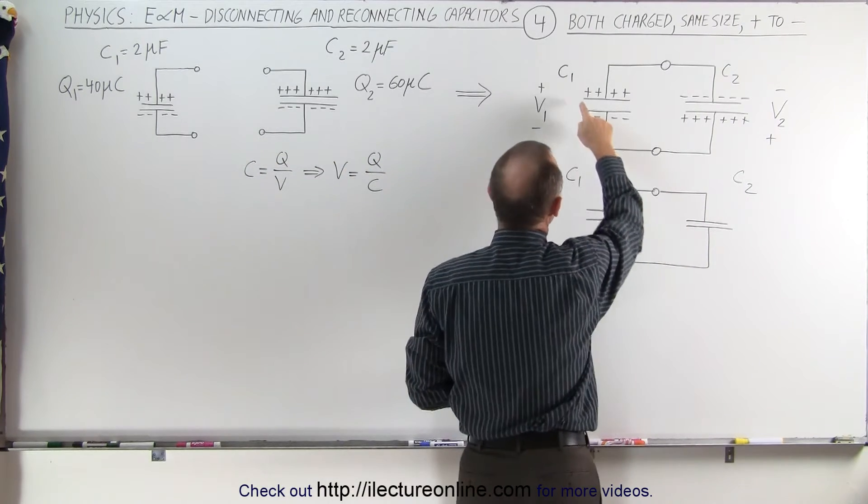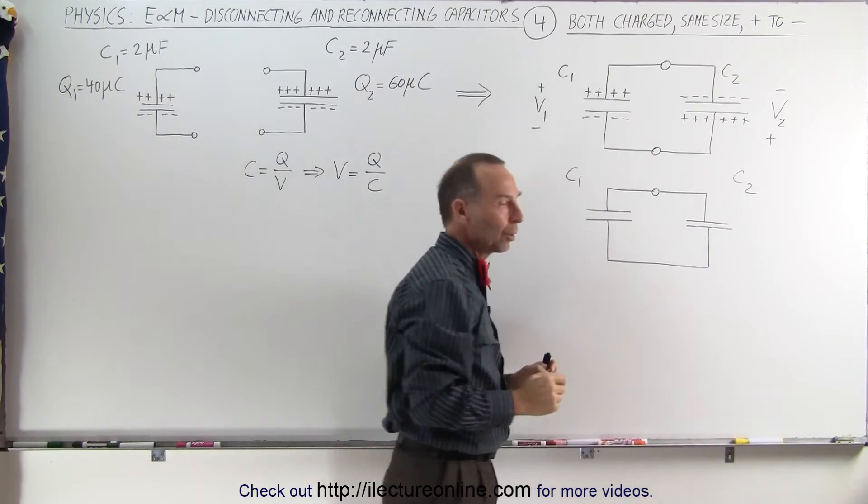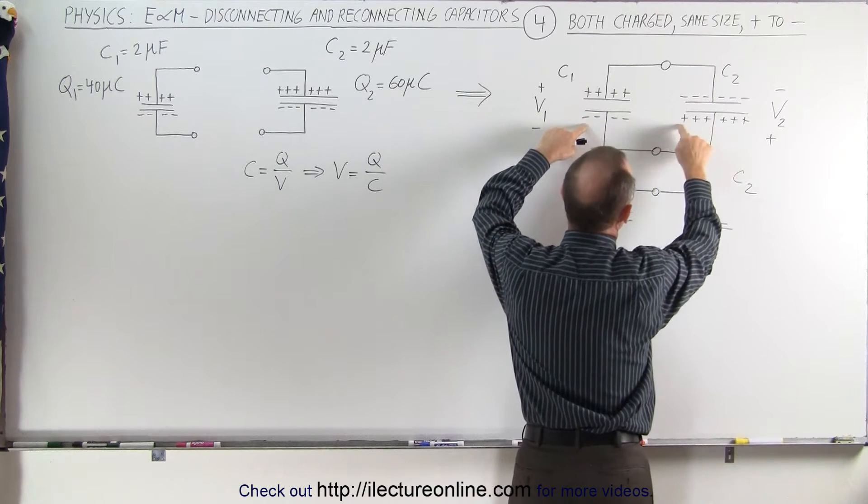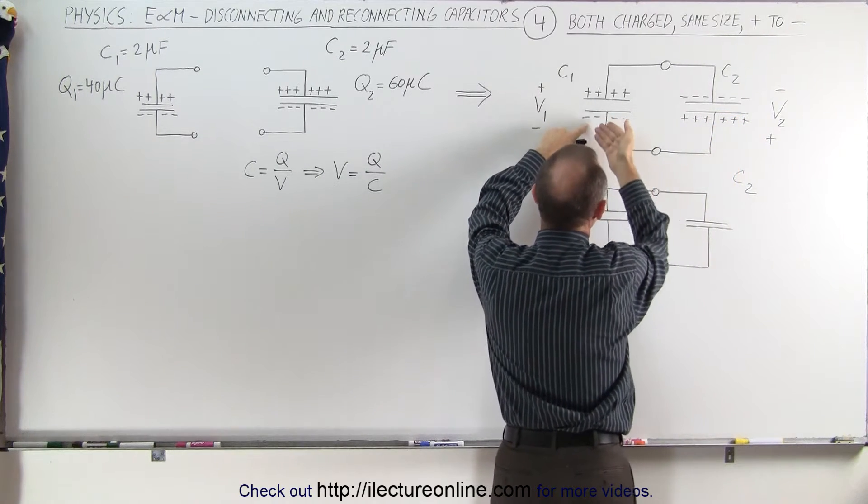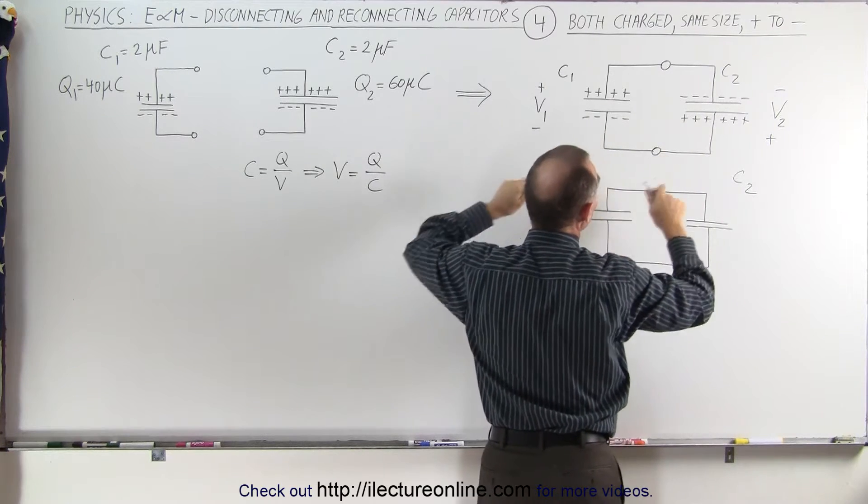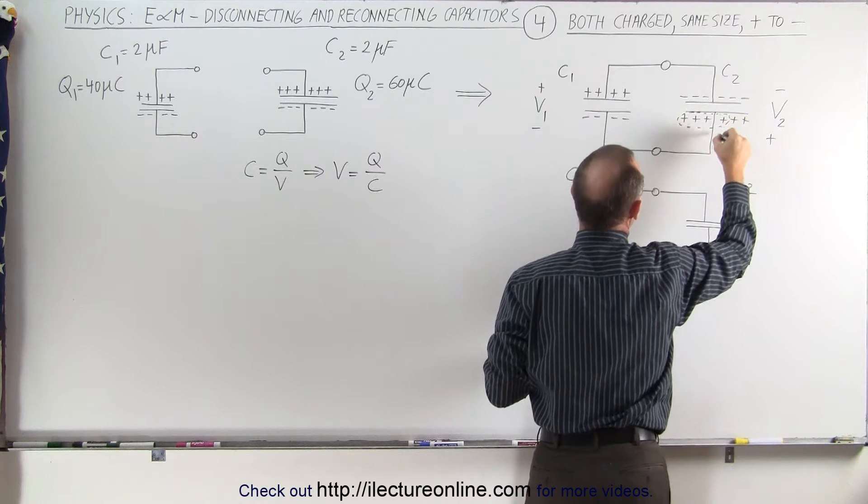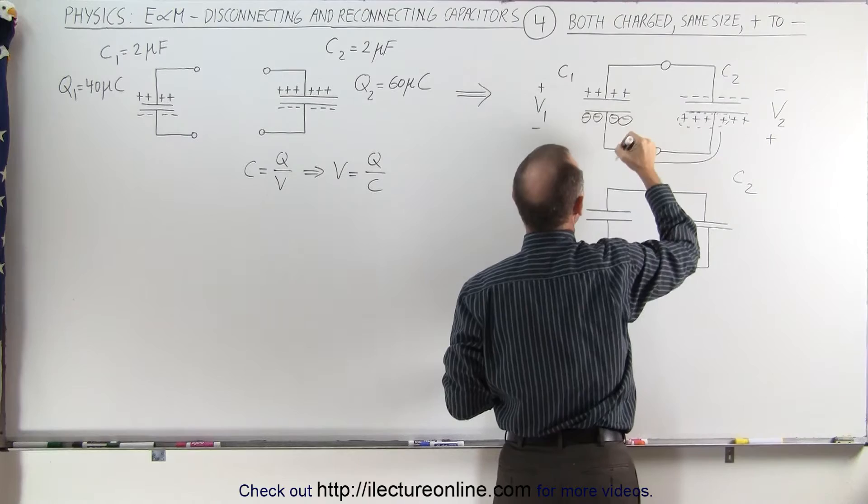We're connecting the positive end of one capacitor to the negative end of the other capacitor. Notice we have all these negative charges here and positive charges there. The positive charges are attracted to the negative charges, so these four charges will march along this wire to the other side and negate these four negative charges.